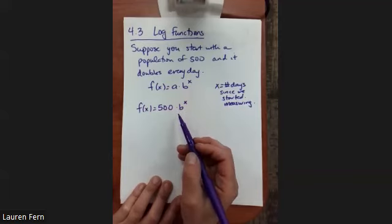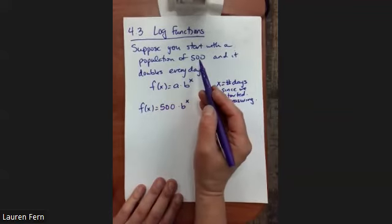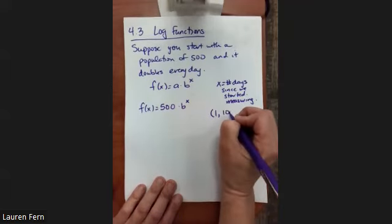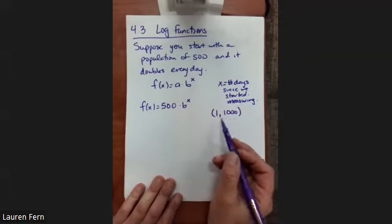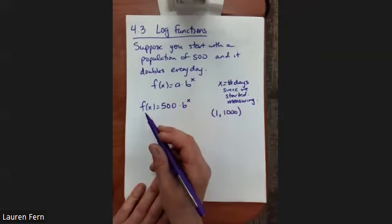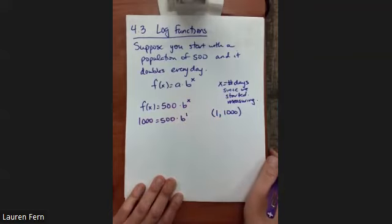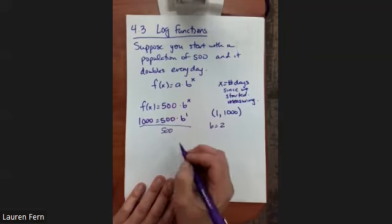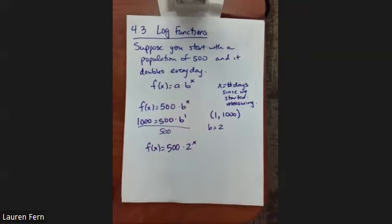Now we need to find our value of b. If on day zero we had 500, on day one we're going to have double that, or 1,000. We take that ordered pair, plug it in for x and our function value to get b. Dividing both sides by 500, we get b equals 2. So we have the equation f(x) = 500 · 2^x.